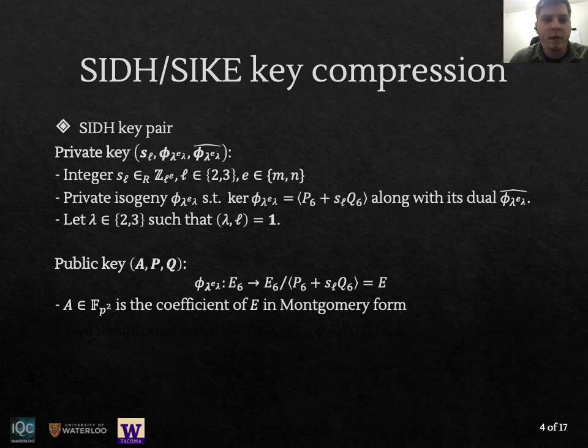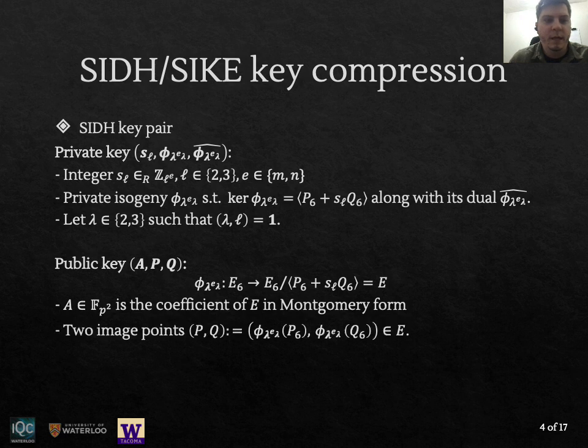The public key in turn can be seen as a triple (A, P, Q), where A is going to be the Montgomery coefficient of the image curve of φ. And P and Q are going to be two points on E that will be the image of the isogeny φ evaluated on the original torsion basis P6 and Q6.